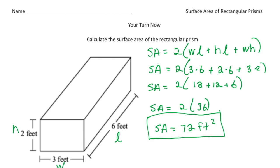Welcome back. Let's see how you did with this practice problem. Here we have a rectangular prism where the dimensions are 2 by 3 by 6. I plugged in the values of the length, width, and height into the formula — two times the quantity of (width times length) plus (height times length) plus (width times height). If you did it correctly, you should have gotten an answer of 72 square feet.